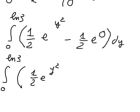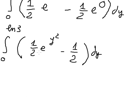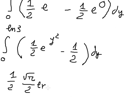So e to the power of u gives us negative 1 over 2 dy. And e to the power of 0 equals about 1, so we have negative 1 over 2 dy.